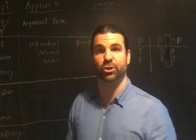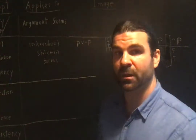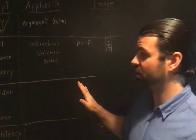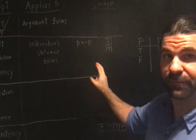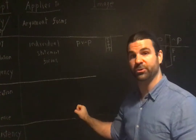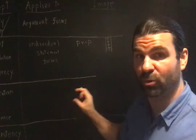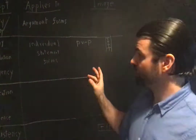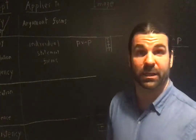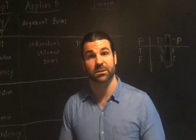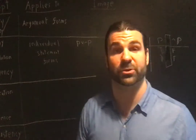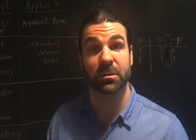Unit 6, Part 2. We just saw what a tautology was — a tautology is an individual statement form where the column in the truth table under the major operator is all true. What is a contradiction? A contradiction is a single statement form where the column under the major operator is all false.